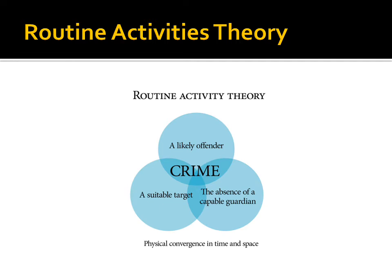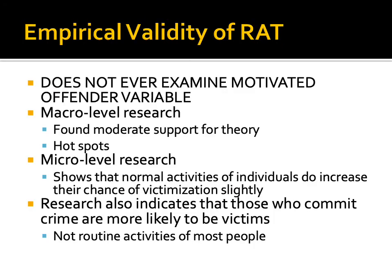Here's a picture of what routine activities looks like. We see that crime happens in the middle with that physical convergence of these three variables. Again, if you remove any one of those variables, crime doesn't happen.